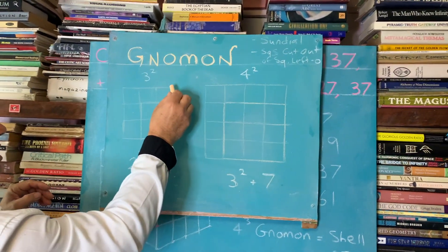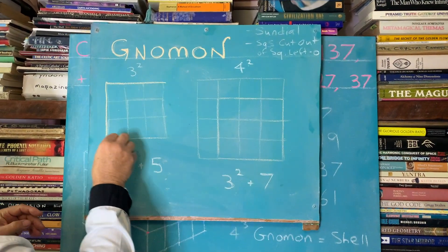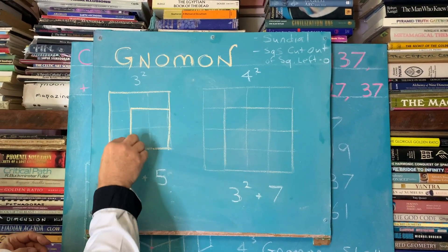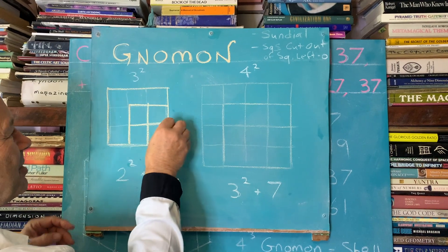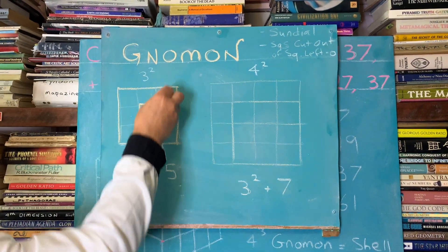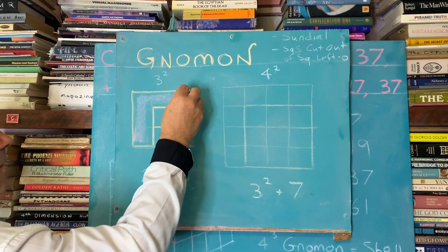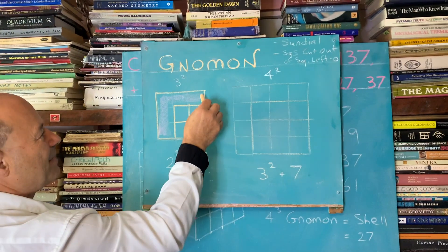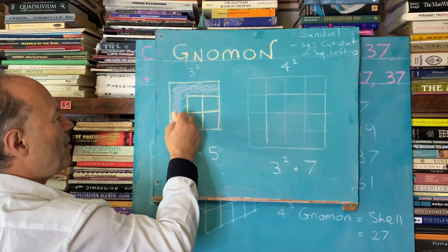And in geometry, a gnomon is when you have a square or a parallelogram and you take out the same shape. So if I took out this two by two square out of the three by three square, what I end up with is 1, 2, 3, 4, 5. So that L shape there is called the gnomon.